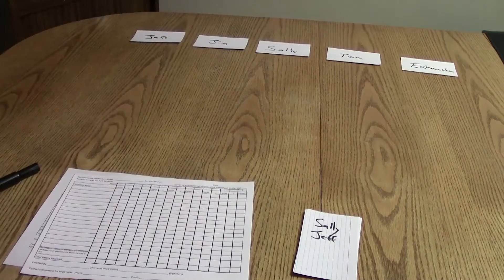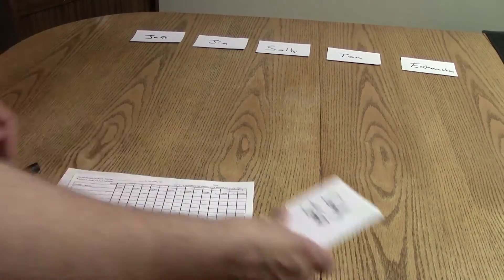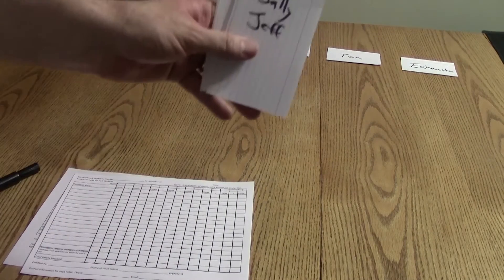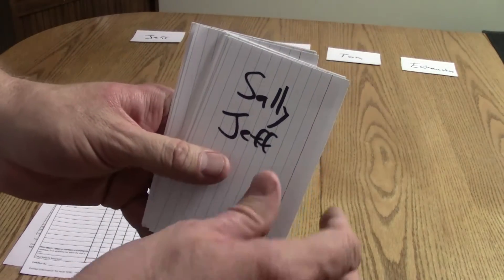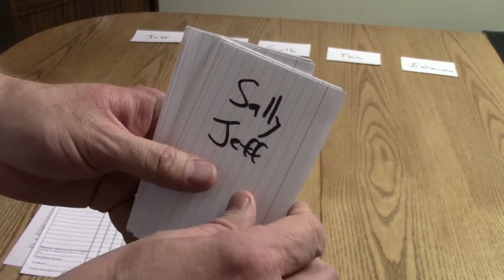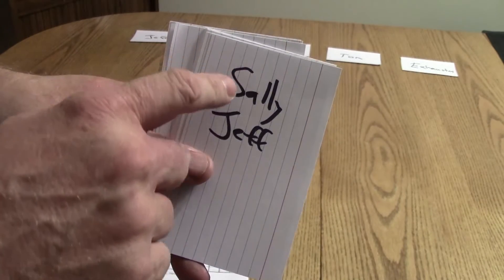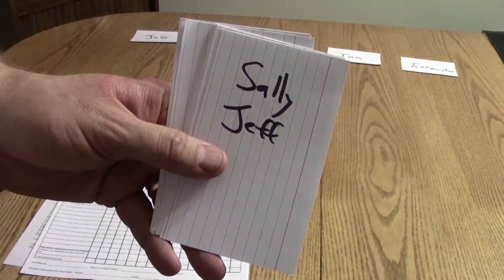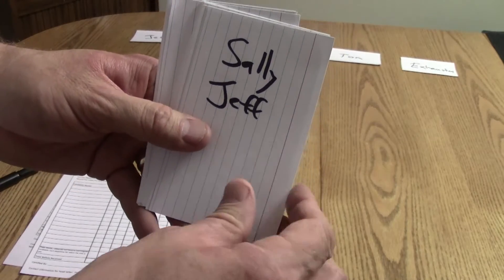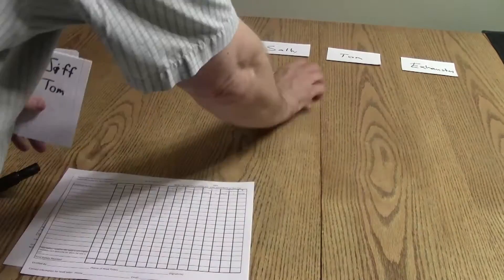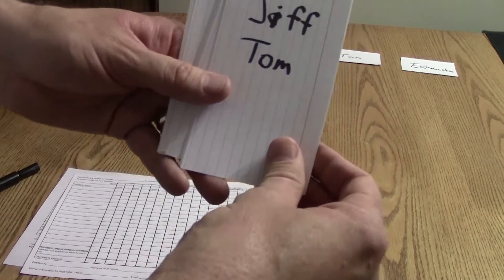So I've got Jeff and Jim and Sally and Tom. Those are my four candidates for the position of precinct chair. And then I've got this card for exhausted, and you'll see what that's about in a minute. So the first thing I'm going to do is I'm going to take all of my ballots and I'm going to divide them up according to the first name on the ballot. Remember that the first name is the voter's first choice. This is the person they most want to elect.